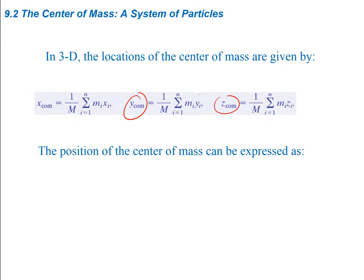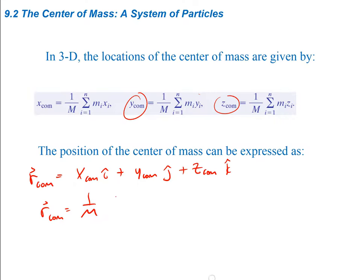The position of the center of mass can also be expressed as a vector from the origin to some point in 3D space. So r_com equals x_com in the i direction plus y_com in the j direction plus z_com in the k direction. This can also be written as r_com equals 1 over M times the summation from i equals 1 to n of mi*ri, where ri encapsulates the x, y, and z components.